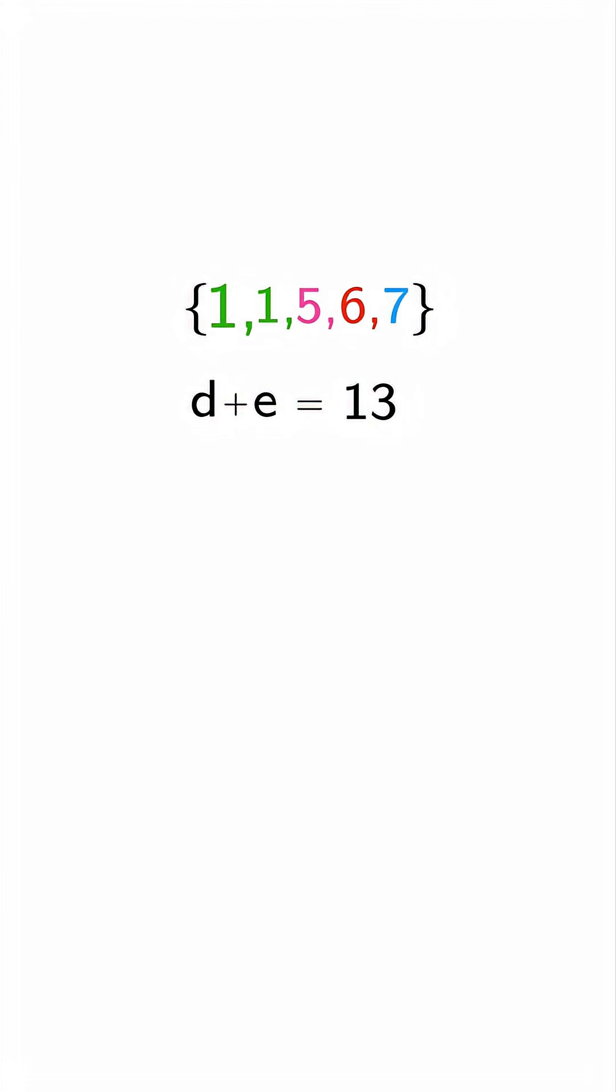What about six and seven? That gives us one, one, five, six, seven. Perfect. The mean is still four, the median is five, and the only mode is one.